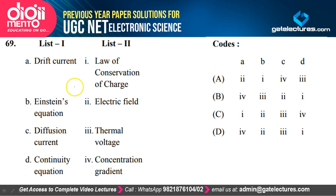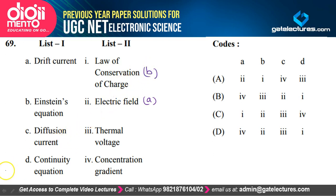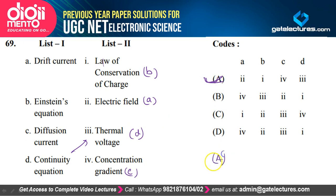Question 70: Matching semiconductor concepts — drift current is due to drifting of charge carriers under an electric field (A→2); Einstein's equation is related to the law of conservation of charge (B→1); diffusion current is related to concentration gradient (C→4); continuity equation is related to thermal voltage (D→3). Option A is the correct option.